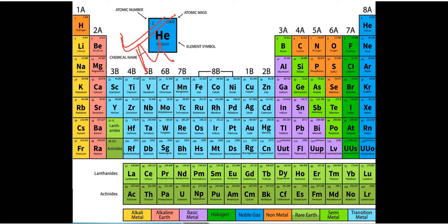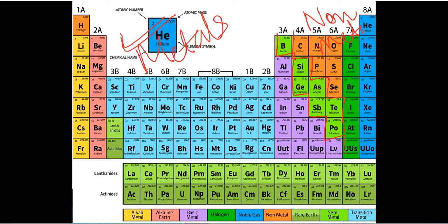In the periodic table, elements on the left-hand side are metals. A zigzag line — shown in green — separates metals from non-metals; these boundary elements are called metalloids. Metalloids are those elements which have some properties of metals and some properties of non-metals. Examples of metalloids include boron, silicon, and germanium. Non-metals are present on the right-hand side of the periodic table.